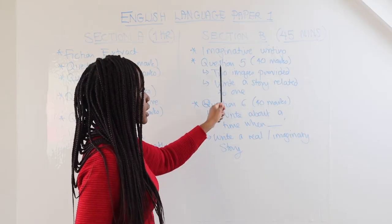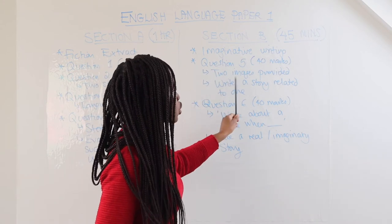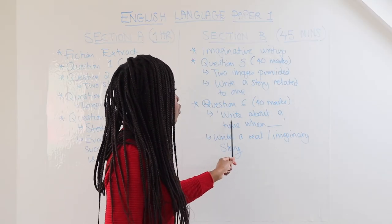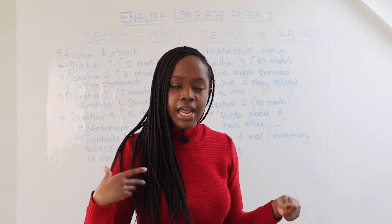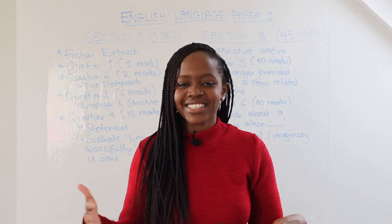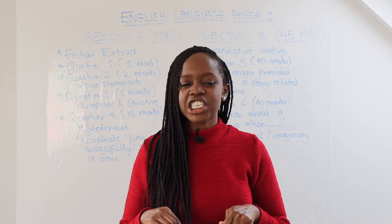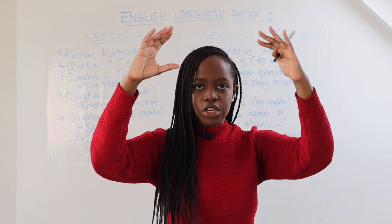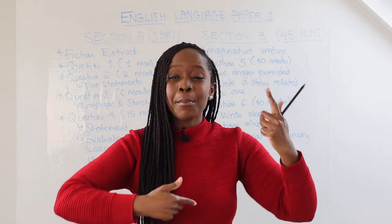Question five and question six are interchangeable in order. Question five gives you two images — you choose one and write a story related to it. Question six asks you to write about a time when something happened, based on a statement rather than an image. I would suggest creating a story around it. You can write a real or imaginary story, but try to make it interesting and exciting. Real life stories based on your own experiences may not always be as exciting, so I usually suggest writing an imaginative story.